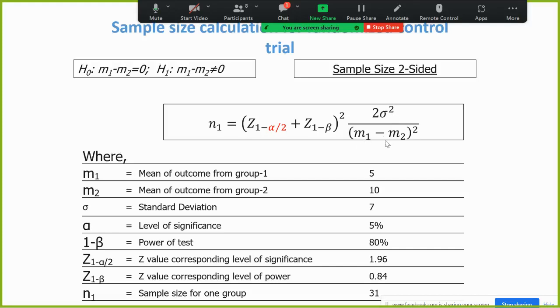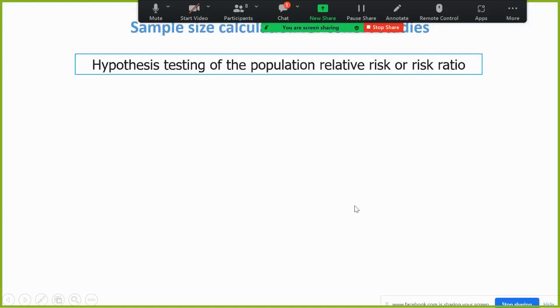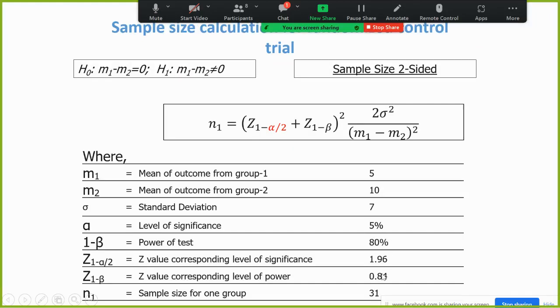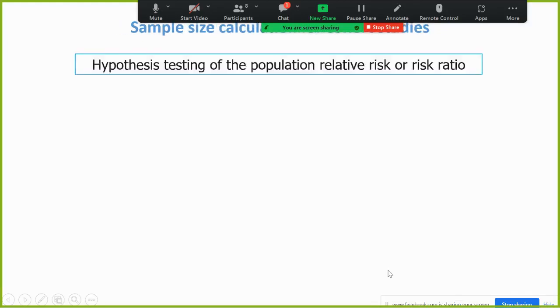That a parameter estimate, that means two sigma square, sigma is the standard deviation divided by mean one divided by mean one minus mean two squared. And if we put the formula in this table, then the sample size is 31 in this group.